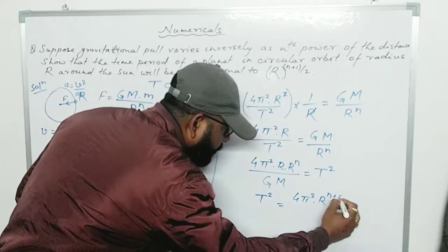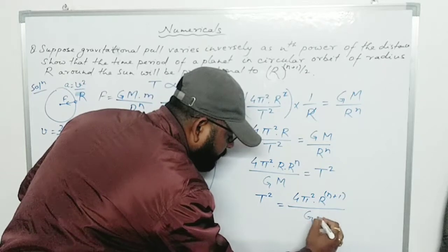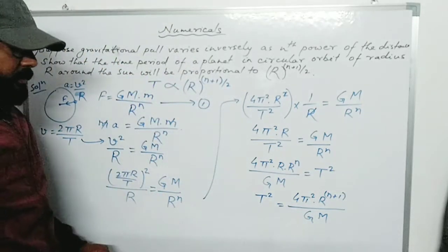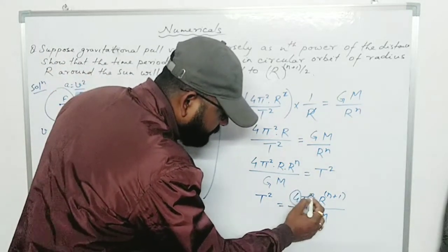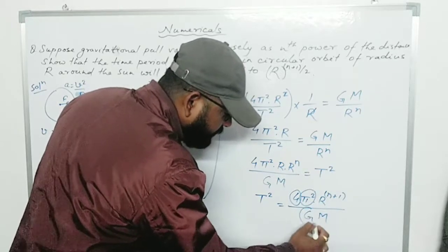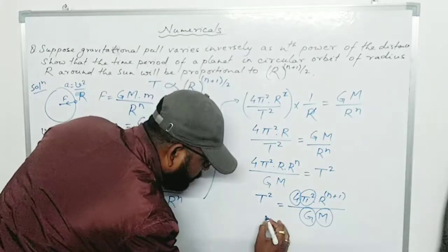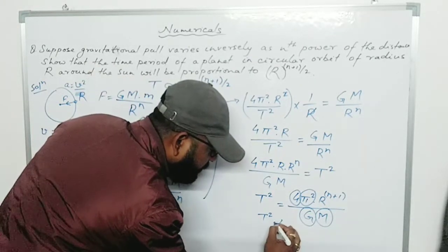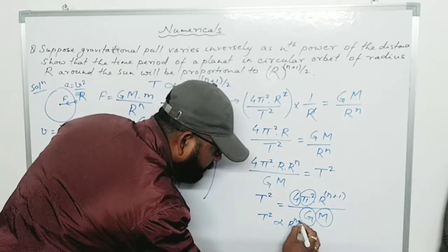Rearranging: 4π²r / T² = GM / r^n, so 4π² · r · r^n = GM · T². Since the bases are the same, the powers add, giving T² = (4π² / GM) · r^(n+1).